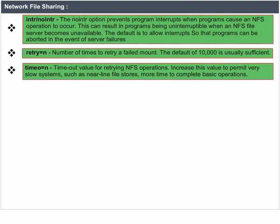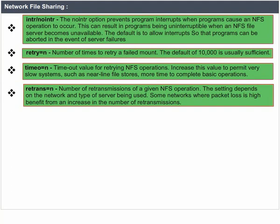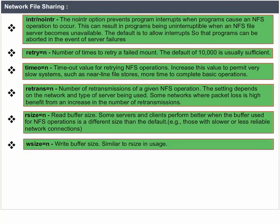Timeo=N: timeout value for retrying NFS operations; increase this value to permit very slow systems, such as near-line file stores, more time to complete basic operations. Retrans=N: number of retransmissions of a given NFS operation; the setting depends on the network and the type of server being used. Some networks where packet loss is high benefit from an increase in the number of retransmissions. Rsize=N: read buffer size — some servers and clients perform better when the buffer used for NFS operations is a different size than the default, for example those with slower or less reliable network connections. Wsize=N: write buffer size, similar to rsize in usage.